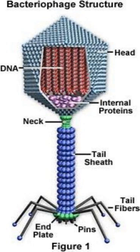The shape of T4 Bacteriophage is a tadpole shape. It consists of three parts, namely head, neck and tail. The head is polyhedral. It is covered by a protein coat called capsid. The capsid is made of about 2,000 protein subunits called capsomeres.